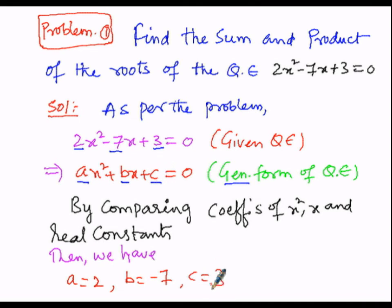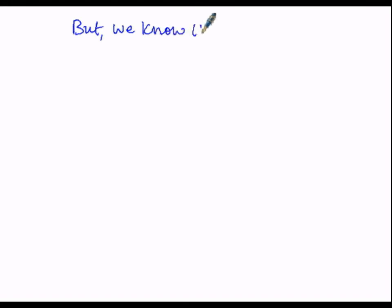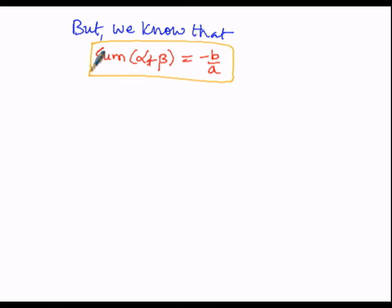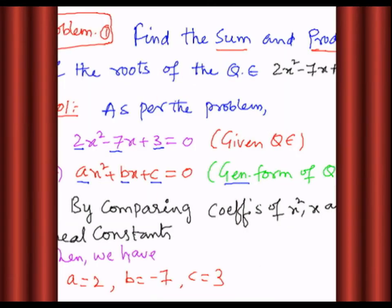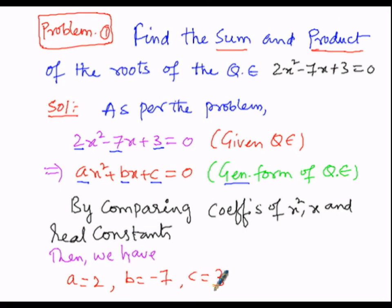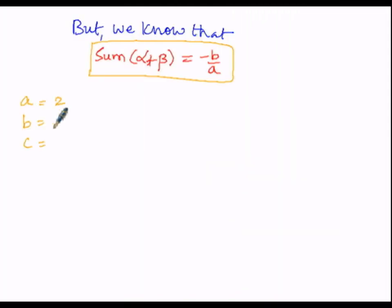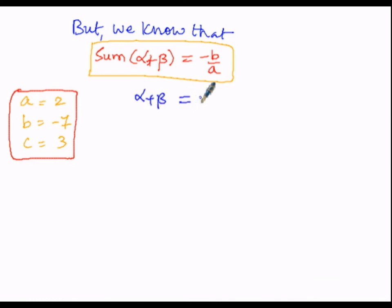Now we have to find the sum and product of the roots. We know that the sum of the roots is given by alpha plus beta = minus b by a. Therefore, sum of the roots equals minus b by a. We are going to replace the values of a, b, and c from the given quadratic equation, where a = 2, b = −7, and c = 3.